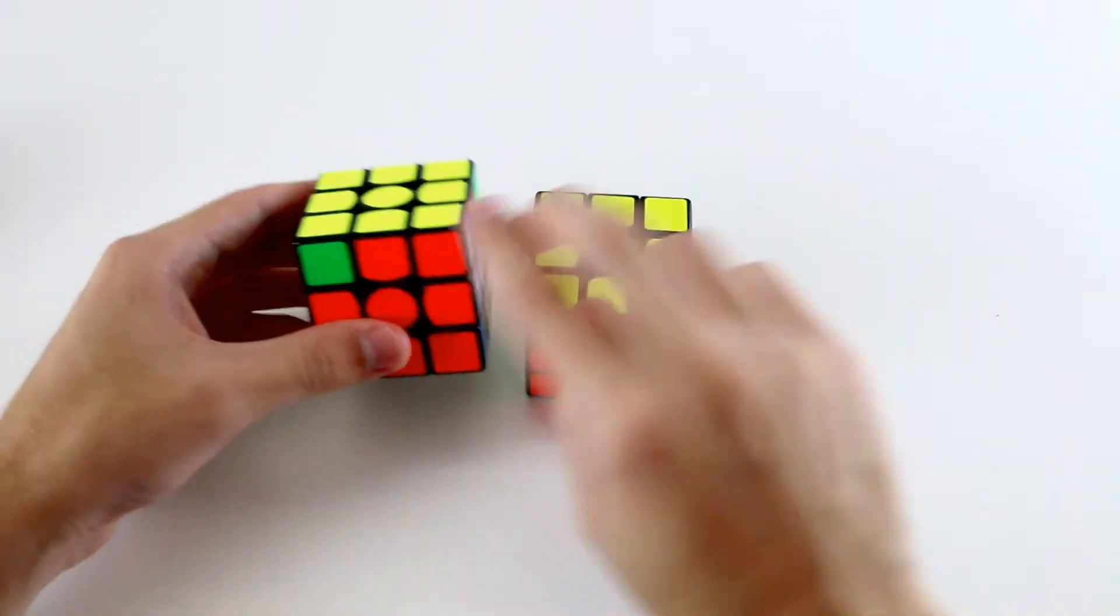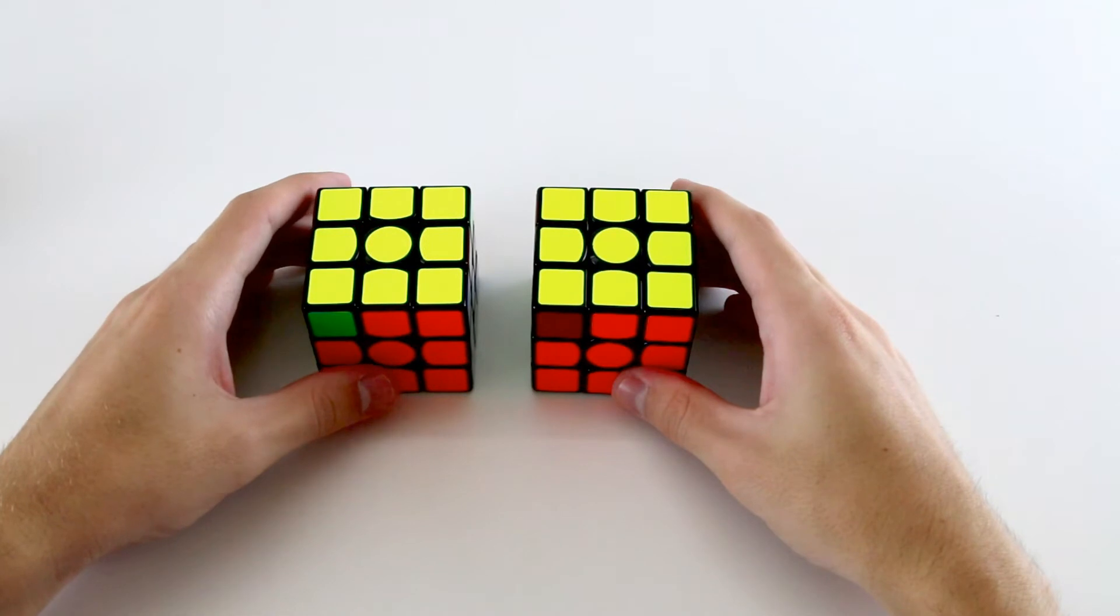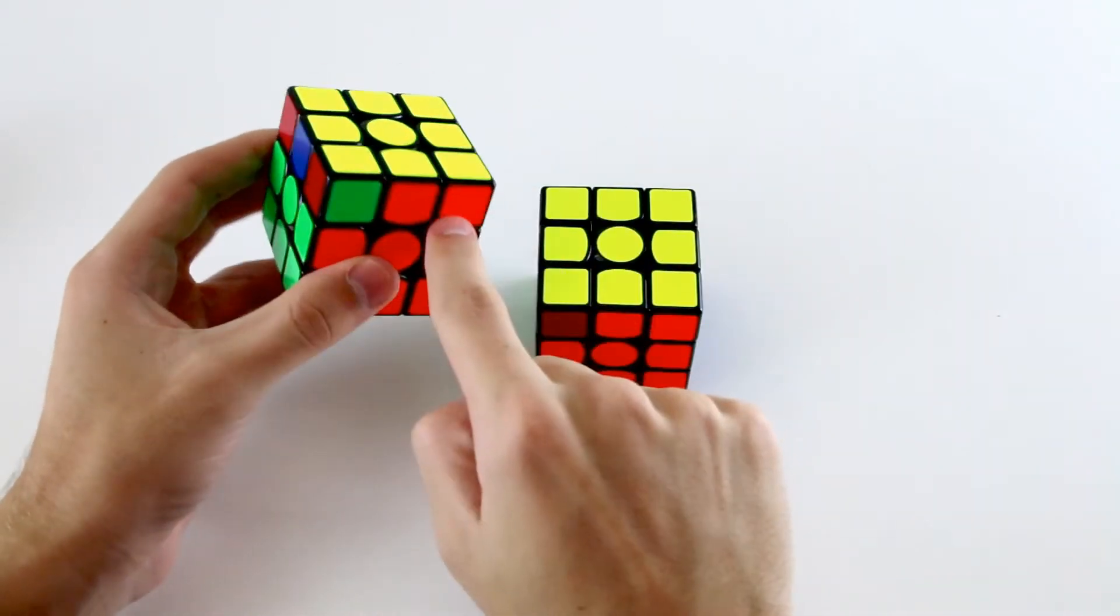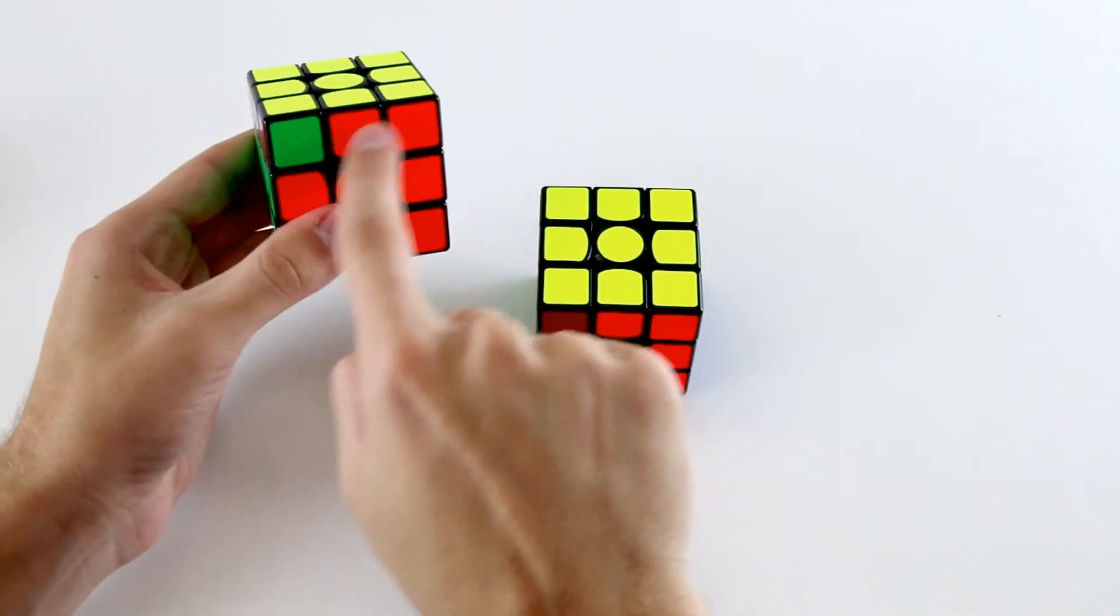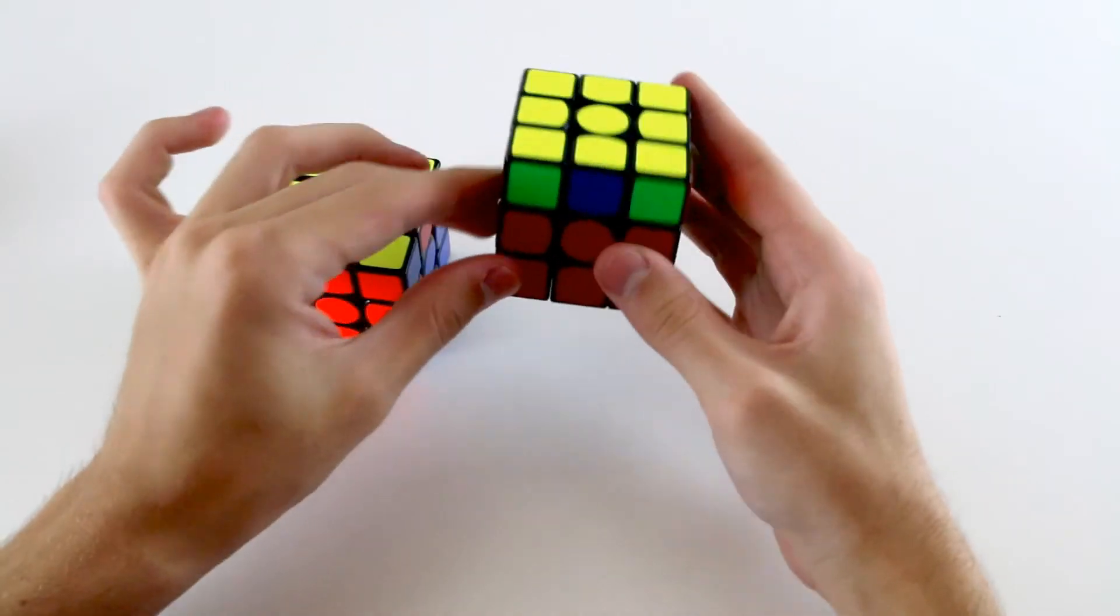For the cases where the block is in the same position, like so, the way to recognize them is to look for the matching corners. So there'll be two matching corner stickers like this, they'll either be adjacent to this block, like so, or they'll be on the opposite side to the block, as per this case.